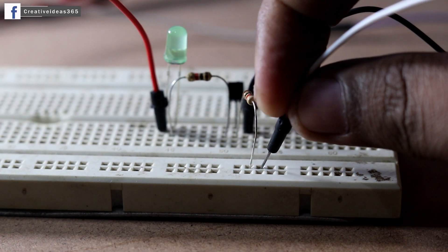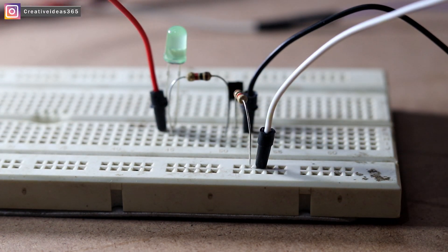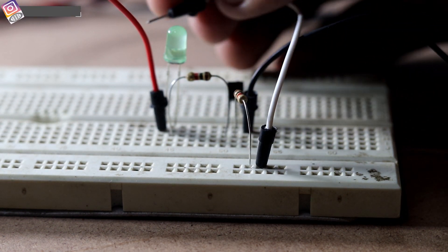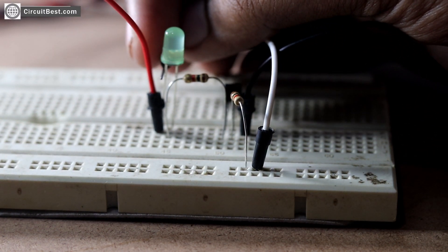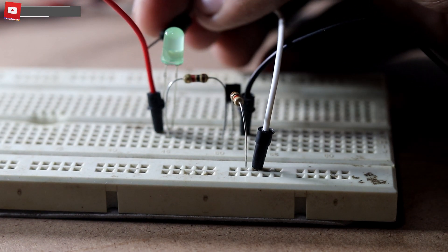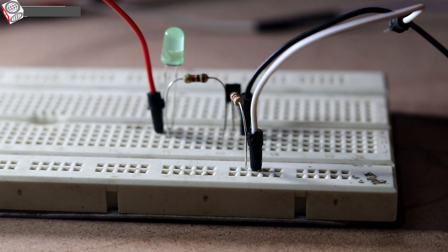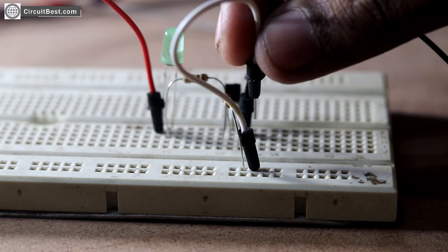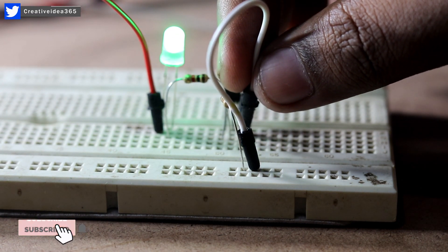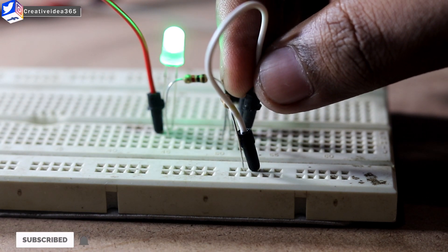I have made the same circuit in the breadboard and here you can see when I connect the base wire with the positive voltage through a resistor then the LED is not glowing. Now if I connect the base wire with the emitter pin I mean the negative pin or the ground then you can see the LED is turning on.